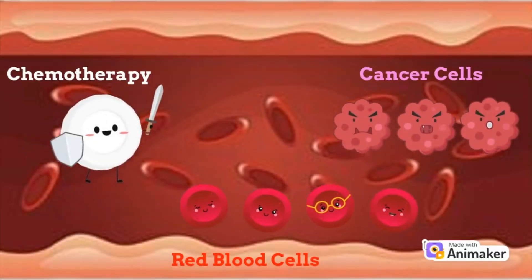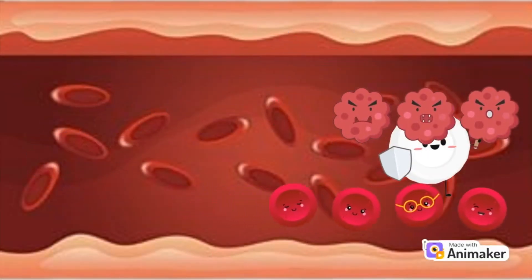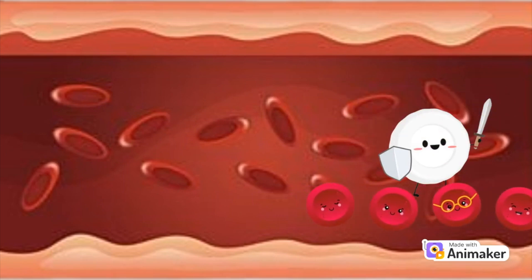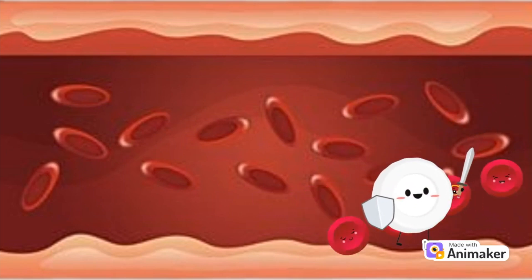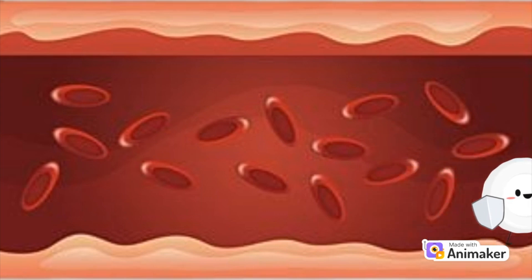What if there was a way to minimize the side effects for blood cancer patients? Well, it's definitely possible. Because chemo primarily targets rapidly dividing cells, it affects not only cancer cells but also normal cells that divide quickly. This includes blood cells, leading to short-term symptoms and risks associated with low blood cell counts.